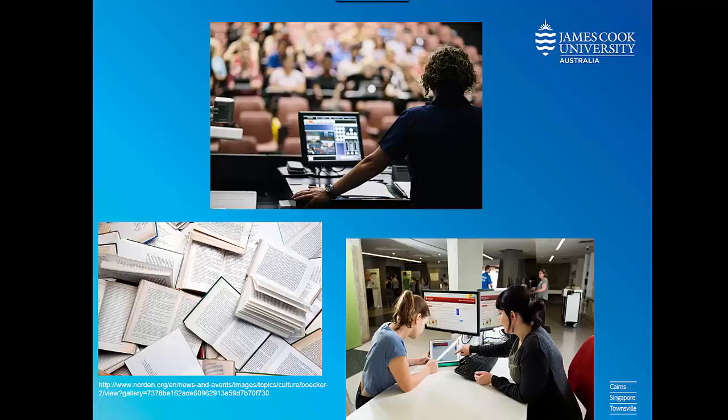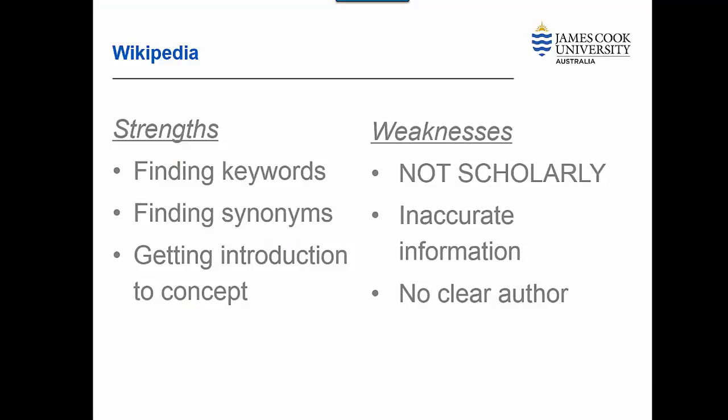Wikipedia is another option worth exploring to help identify additional keywords and can be useful for background information. We would advise you against using Wikipedia as a reference in university assignments though. If you find something interesting in Wikipedia, corroborate it in a more traditional scholarly source, like the one we're about to look at.